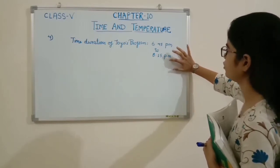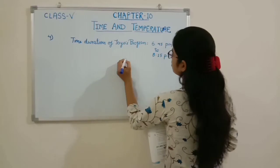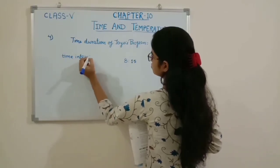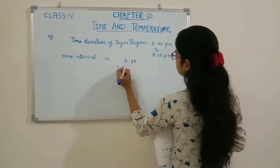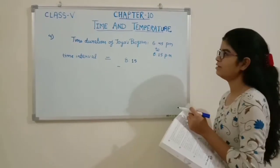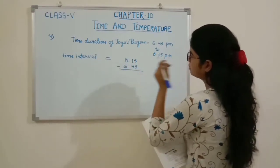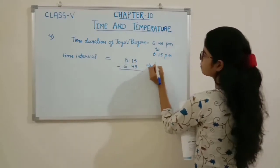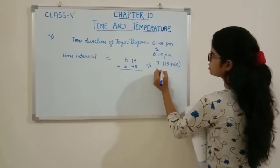The time duration is between 8:15 PM and 6:45 PM. We subtract 6:45 PM from 8:15 PM. Since both units are in PM, we borrow 1 hour from 8, making it 7 hours and 75 minutes, keeping 6:45 the same.